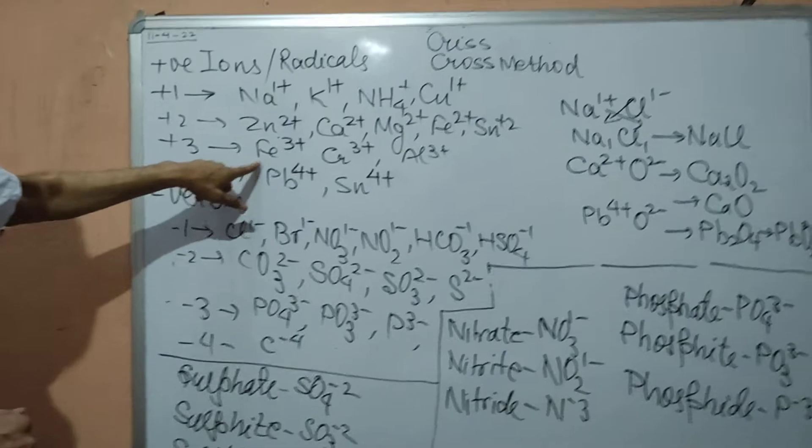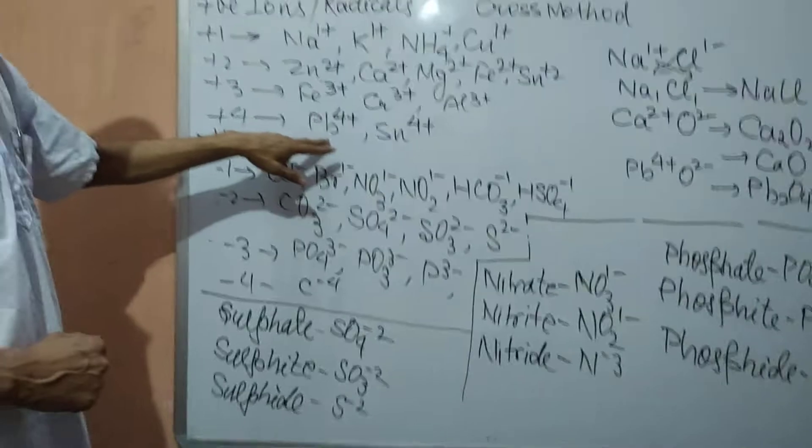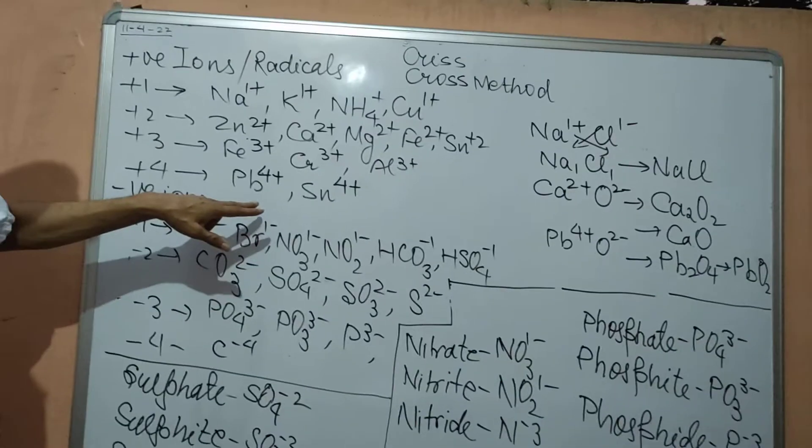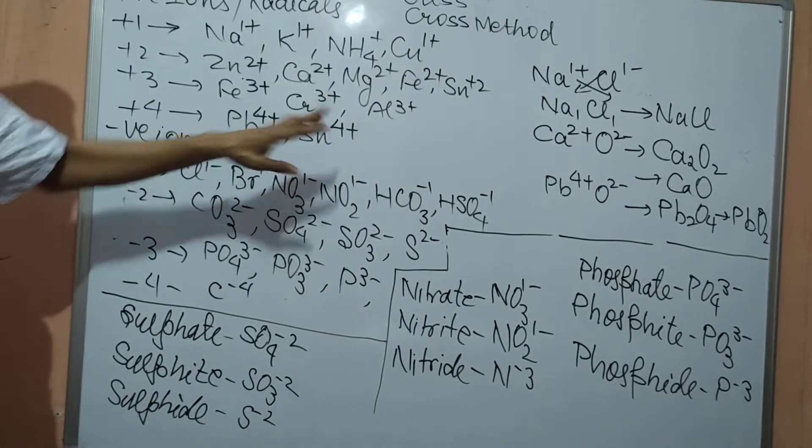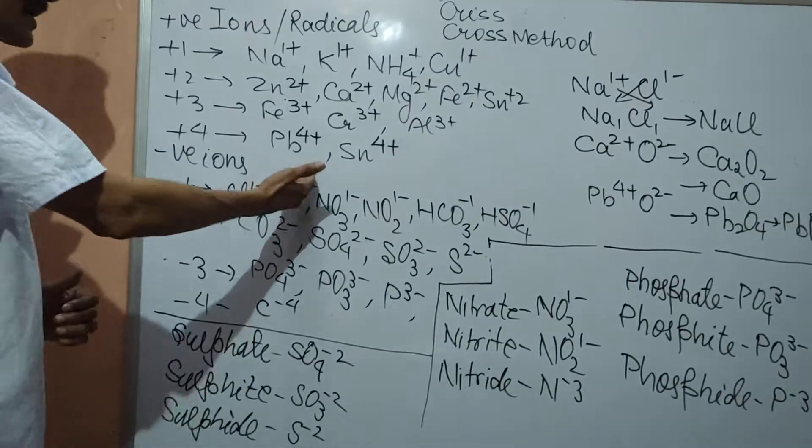Plus 3: iron, Fe3+, chromium 3+, aluminium 3+. And plus 4, Pb4+, lead or Sn4+. It is called stannic or plumbic.